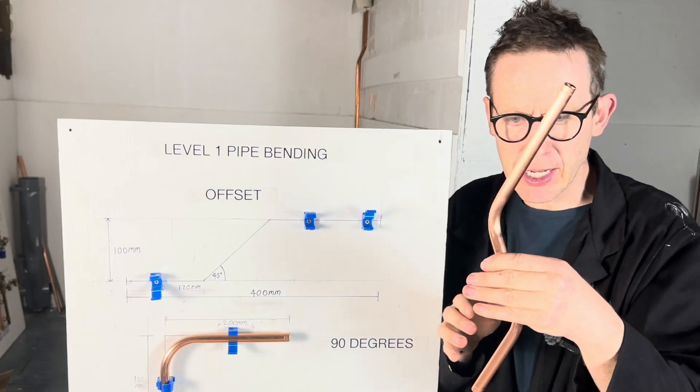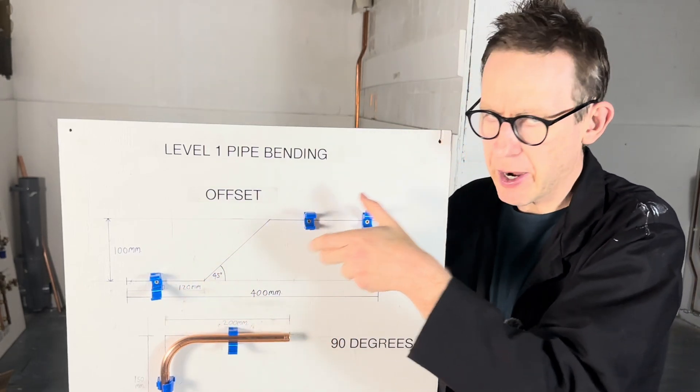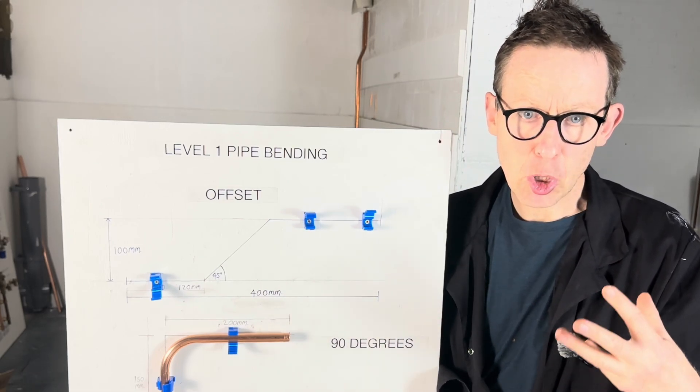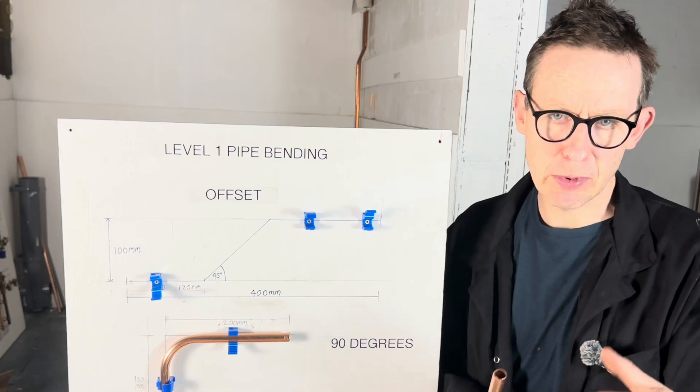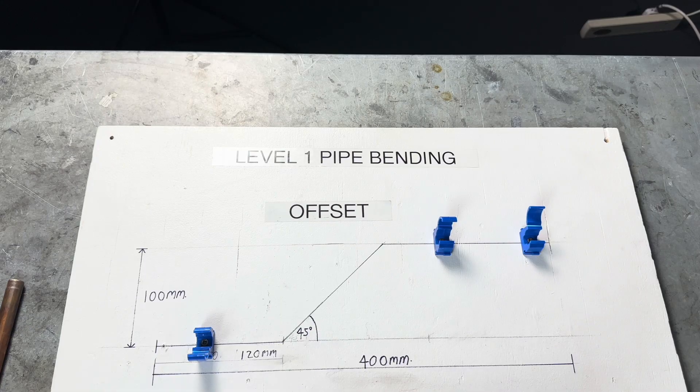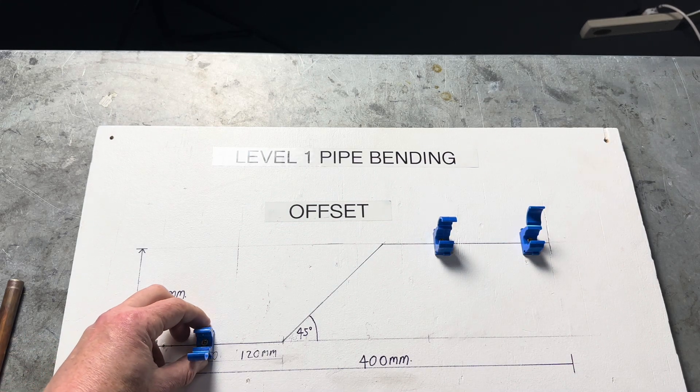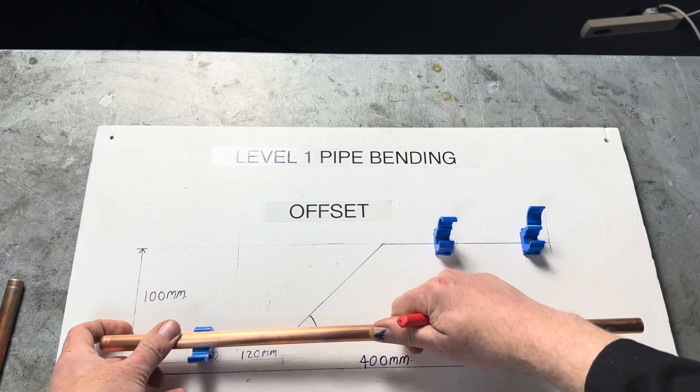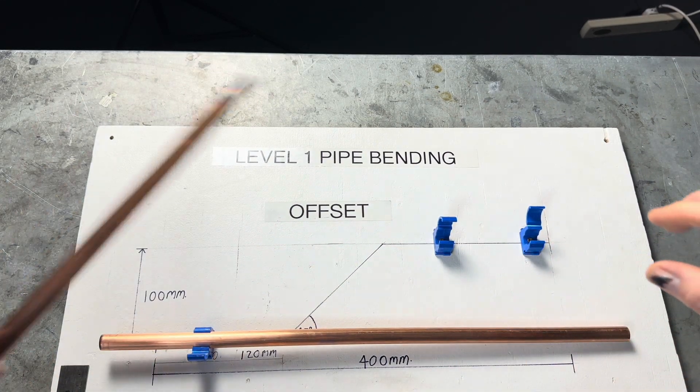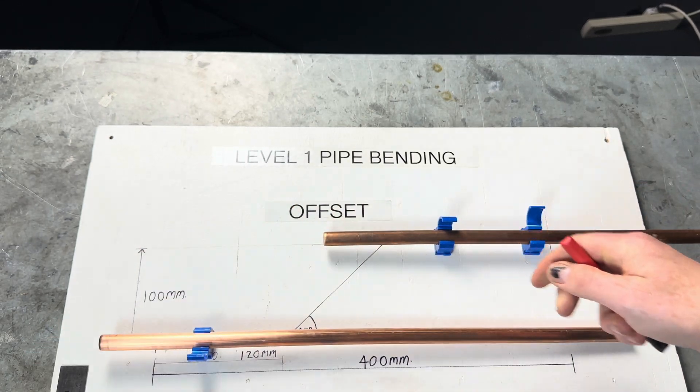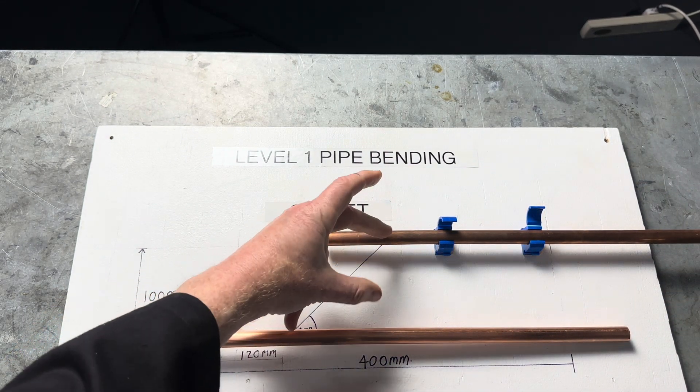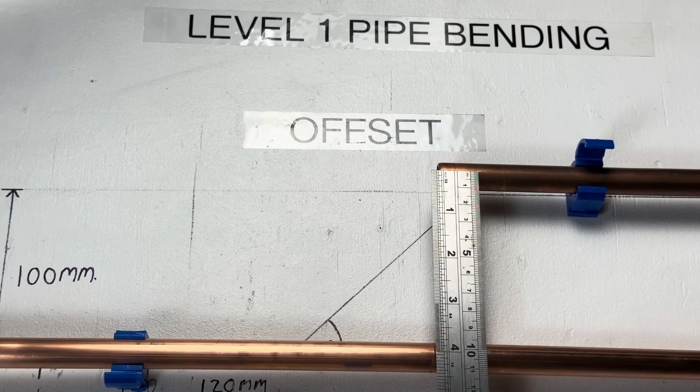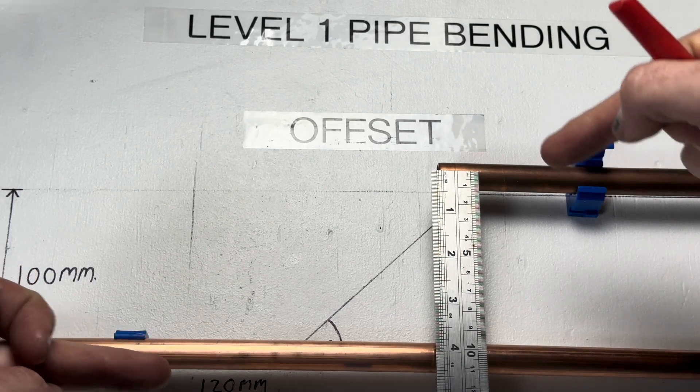So the first offset we're going to be looking at has got the angles and the height specified. So let's do that one first and then we'll look at some more usual plumbing type of offsets that you'll come across. So from middle to middle, it's got to be 100 mm and hence the clips are 100 mm apart.